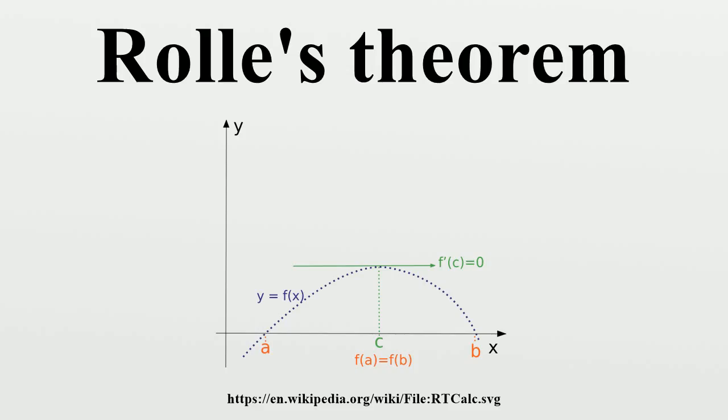Second example: if differentiability fails at an interior point of the interval, the conclusion of Rolle's theorem may not hold. Consider the absolute value function, then f(-1) equals f(1), but there is no c between -1 and 1 for which the derivative is zero. This is because that function, although continuous, is not differentiable at x equals zero. Note that the derivative of f changes its sign at x equals zero but without attaining the value zero. The theorem cannot be applied to this function because it does not satisfy the condition that the function must be differentiable for every x in the open interval.